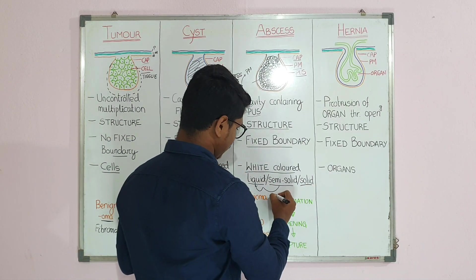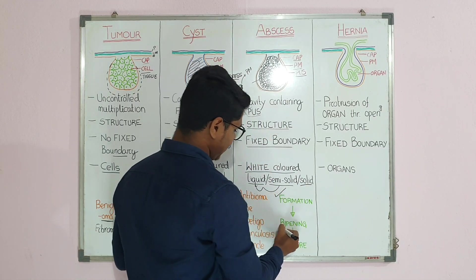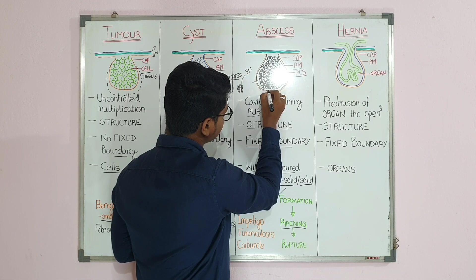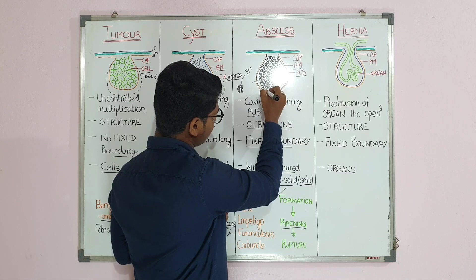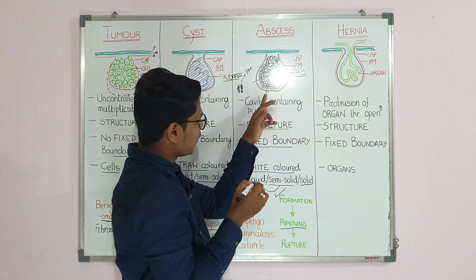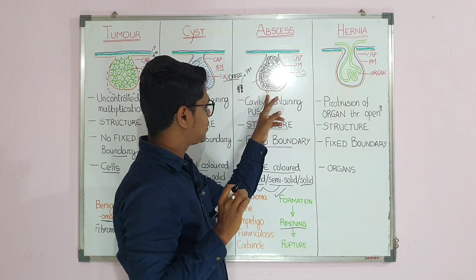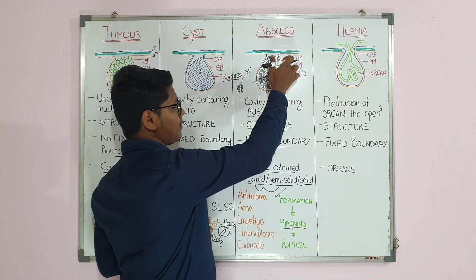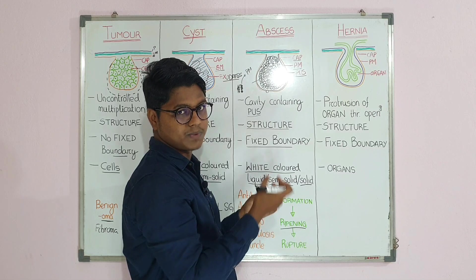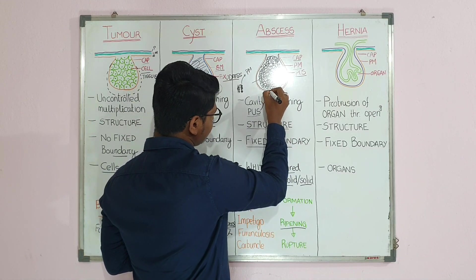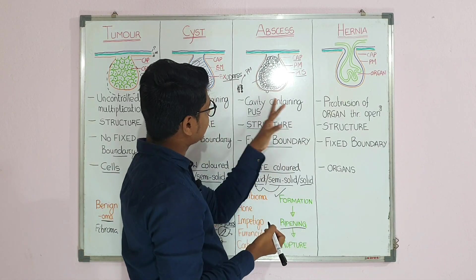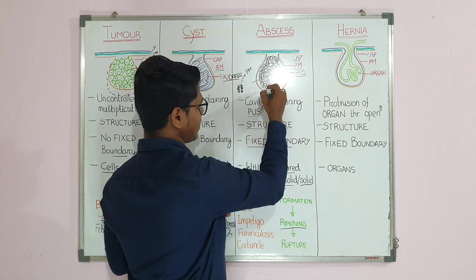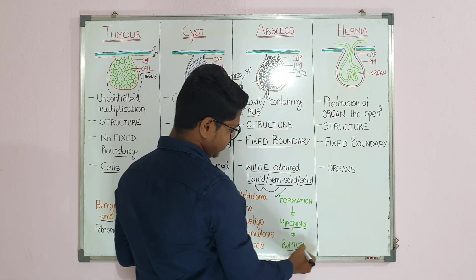An abscess has three stages. First is formation. Second is ripening — the pus moves around to the thinnest part of the wall, becoming more and more thin, and you will find a point appearing. This pointing is not always gravity-dependent; it may appear at various positions. If it is happening in anti-gravity places, you have to give a counter opening to drain. This pointing is known as ripening and is a characteristic of abscess.